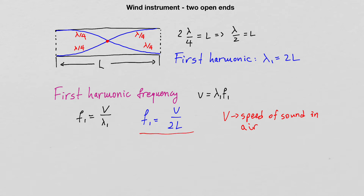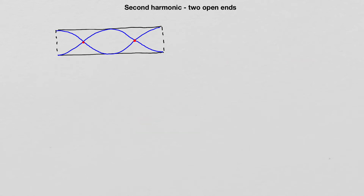Here are the two expressions needed to generalize a formula for harmonics in a wind instrument with two open ends. Now let's look at the second harmonic. The standing wave corresponding to the second harmonic has two nodes and antinodes at the openings, as required. The length of the pipe is L, and I want to find the relationship between the wavelength inside the pipe and its physical length.